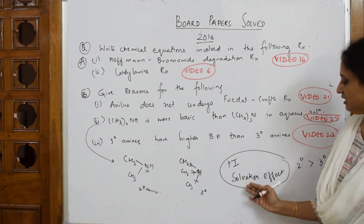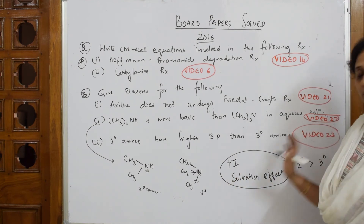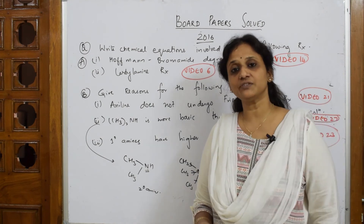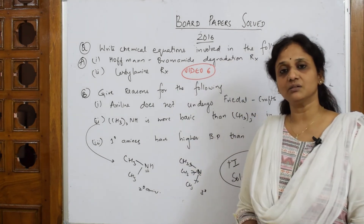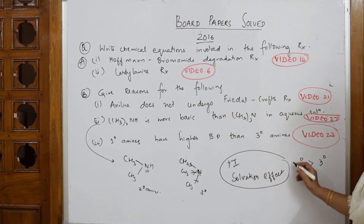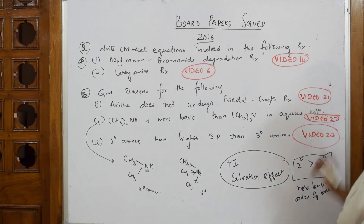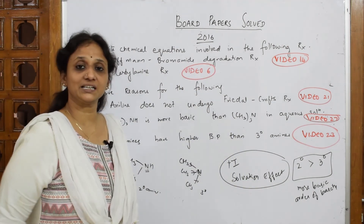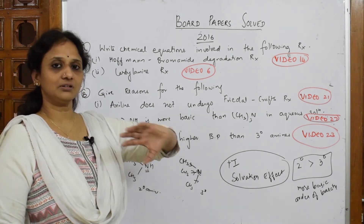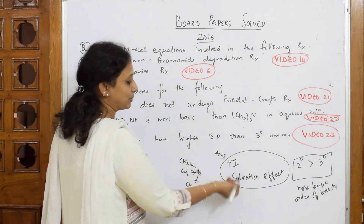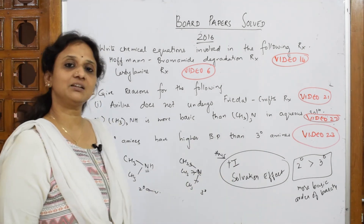Please watch video number 27 — I have clearly explained what solvation effect is there; you will clearly understand the concept. So based on alkyl groups there is one order from +I effect, and based on hydration/solvation effect there is another order. When we combine both, we always give secondary amine higher basicity. The order of basicity makes secondary amine more basic than tertiary. Your answer should be: both +I effect and solvation effect make secondary amine more basic than tertiary.